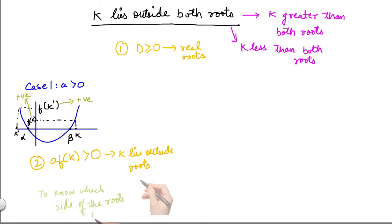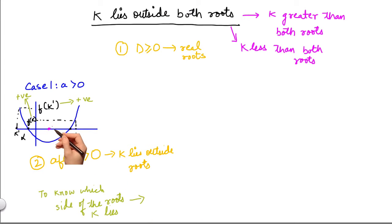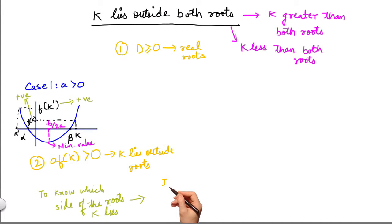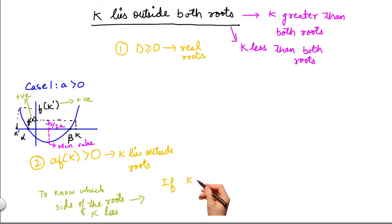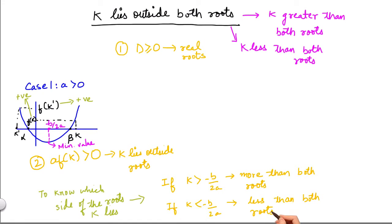Now, to determine which side of the roots k lies on, we can use a simple trick. We need to find the value of x at which the given equation has its least value. That value of x, as we have learned, is minus b by 2a. If k is greater than minus b by 2a, then k is more than both the roots; else, k is less than both the roots.